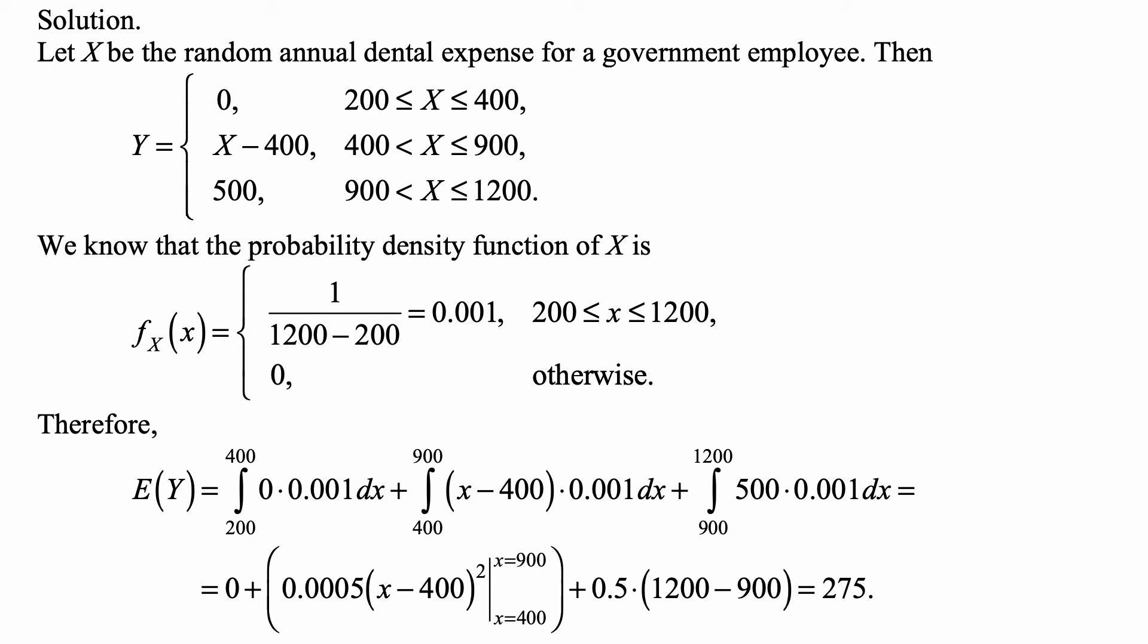Plus 0.5 coming from 500 times 1 over 1000, that constant we can just put in front. We take the length of the interval where we're doing the integration times that constant, so it's 0.5 times 1200 minus 900. If you calculate this, this equals 275.